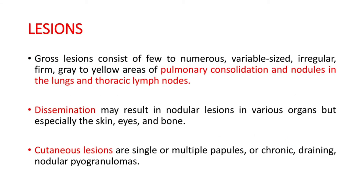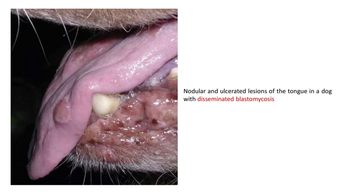Coming to post-mortem lesions - gross lesions consist of few to numerous variable-sized irregular firm gray to yellow areas of pulmonary consolidation and nodules in the lungs and thoracic lymph nodes. Dissemination may result in nodular lesions in various organs, especially the skin, eye, and bone. Cutaneous lesions are single or multiple papules or chronic draining nodular pyogranulomas. Here you can see nodular and ulcerated lesions of the tongue in a dog with disseminated blastomycosis.